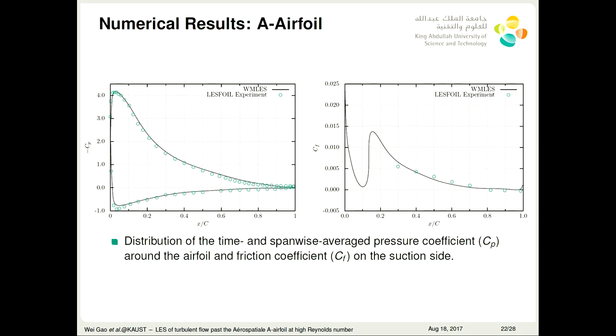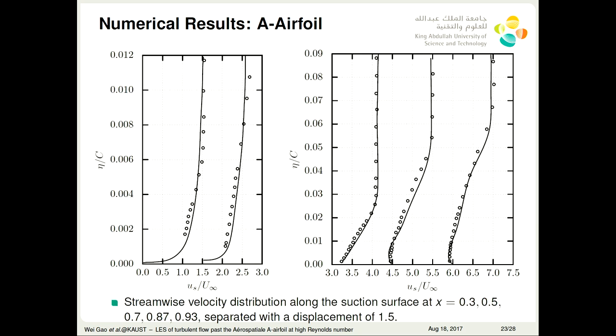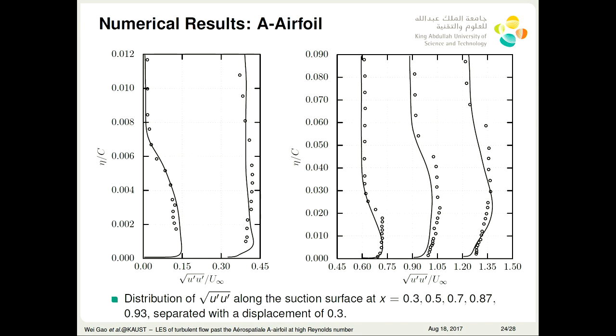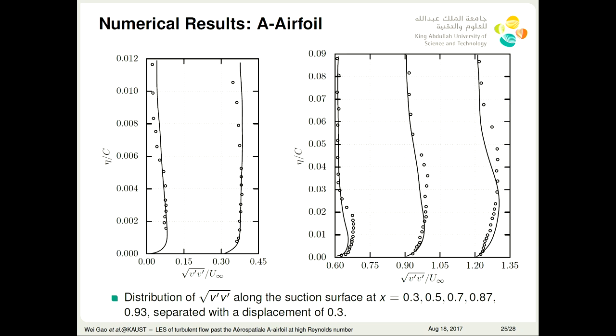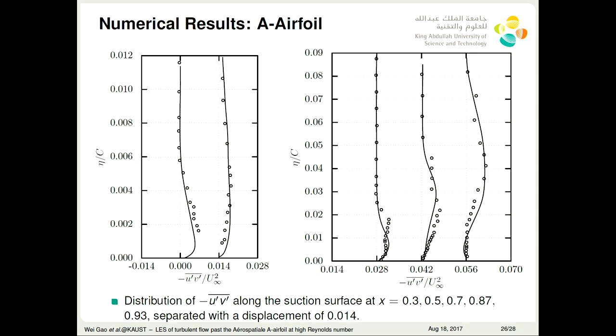This is the A-airfoil results. Also, we find that the pressure coefficient and the friction coefficient compare well with the experiment. This is the streamwise velocity distribution along the suction surface. The left one is very close to the airfoil. Another one is far away from that. We find that in the attached zone, it compares very well. Only small difference existing in the separation zone. This is the u'u' along the suction surface. Also, in the attached zone, it compares well. In the separation zone, not well, but acceptable. This is the v'v' profile, the same conclusion as before.